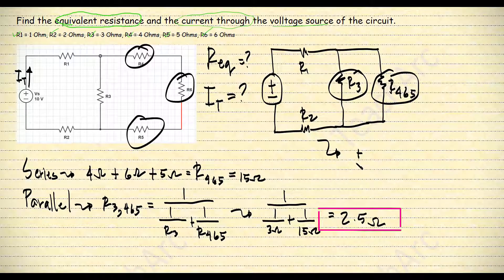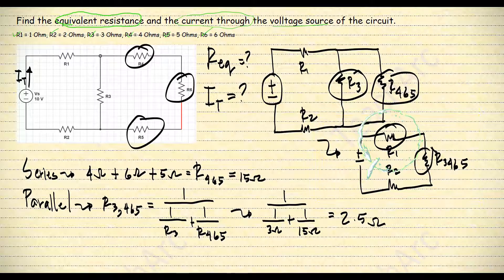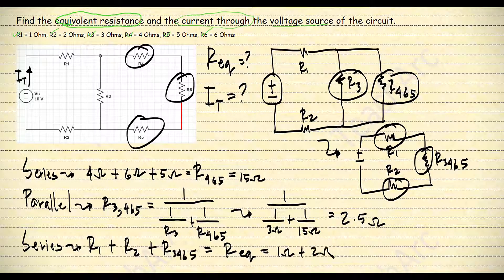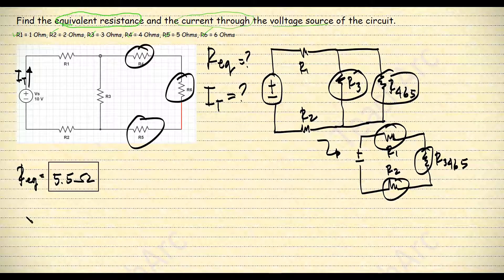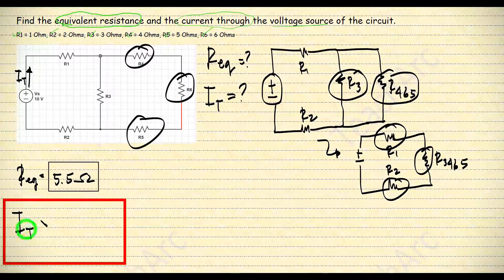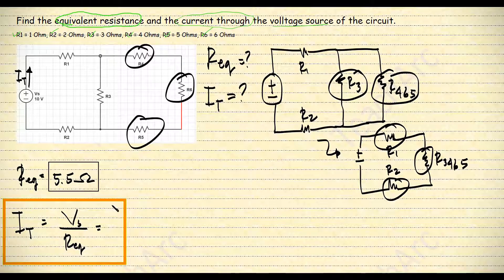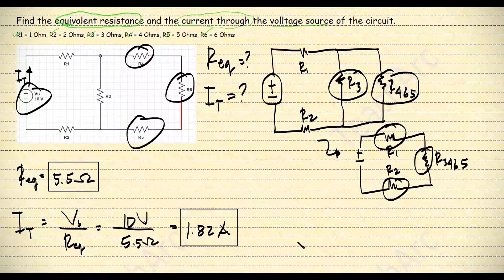After drawing the simplified version again, now that we have combined R3, R4, R6, and R5, we notice a series connection between the two remaining resistors R1 and R2, and the combined R3, R4, R6, R5. Adding all their values gives us the equivalent resistance of all six resistors, which equals 5.5 ohms. To find the total current, we use Ohm's Law: I_total equals the voltage source divided by the equivalent resistance. I_total is equal to 1.82 amperes.